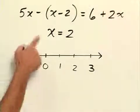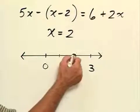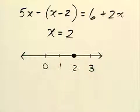Our solution for this equation was x equals 2. We need to graph this solution on the real number line. To do this, all we do is put a point or a dot for the number 2 on the number line.